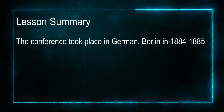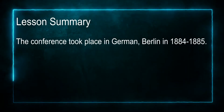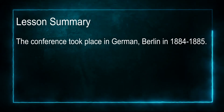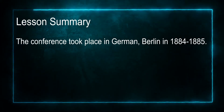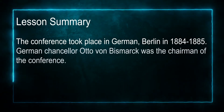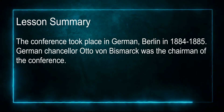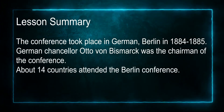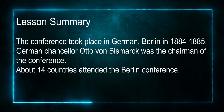Now that we have come to the end of today's lesson, let us review what we have learned about the Berlin Conference of 1884. The conference took place in Berlin, the capital city of Germany, from 1884 to 1885. German Chancellor Otto von Bismarck was the chairman of the conference, and about 14 countries attended.